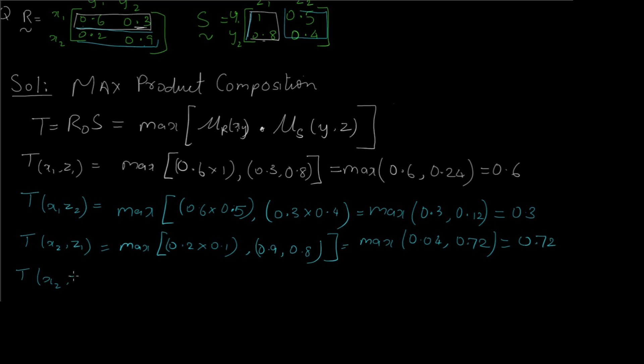Now for the last value of the composition, x2 comma z2, we have max of... We take the last row and last column, so 0.2 into 0.5 and 0.9 into 0.4. This gives us max of 0.1 comma 0.36. The greater out of these two is 0.36.